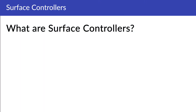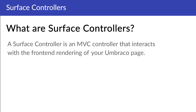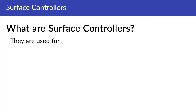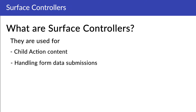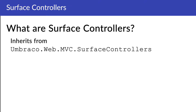We'll start out with the question: what are surface controllers? Basically, a surface controller is an MVC controller that interacts with the frontend rendering of your Umbraco page. It can be used for things like child action content and is mainly used for handling form data submission. Every surface controller in Umbraco inherits from the Umbraco WebMVC surface controller class, which provides a set of benefits.